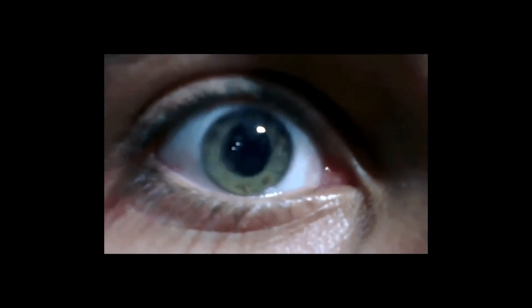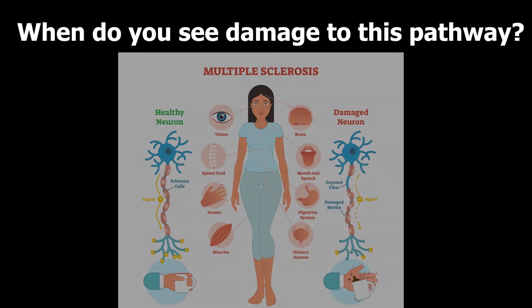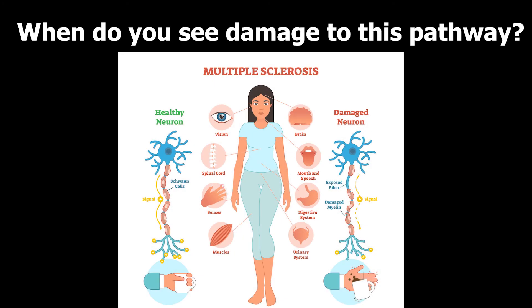And if you damage any part of this, then you're going to get some kind of nystagmus because you can't look in the same direction, so the other eye is going to be trying to figure out where to go. And you really only see this with multiple sclerosis. I mean, of course, there's other things that cause it, but for Step 1, that's really all you're going to need to know.